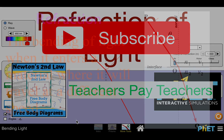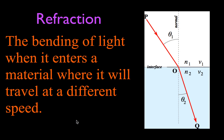Let's get started with refraction of light. What is refraction? Here's a quick definition. Refraction is the bending of light when it enters a material, whether it be traveling at a different speed. You can think of this as air and water, and water is more dense than air. So when light — this incoming light ray, this incident ray — crosses this boundary, this interface between these two different materials, it's going to be bent because it's going to be traveling slower in this material, and it bends towards the normal line.